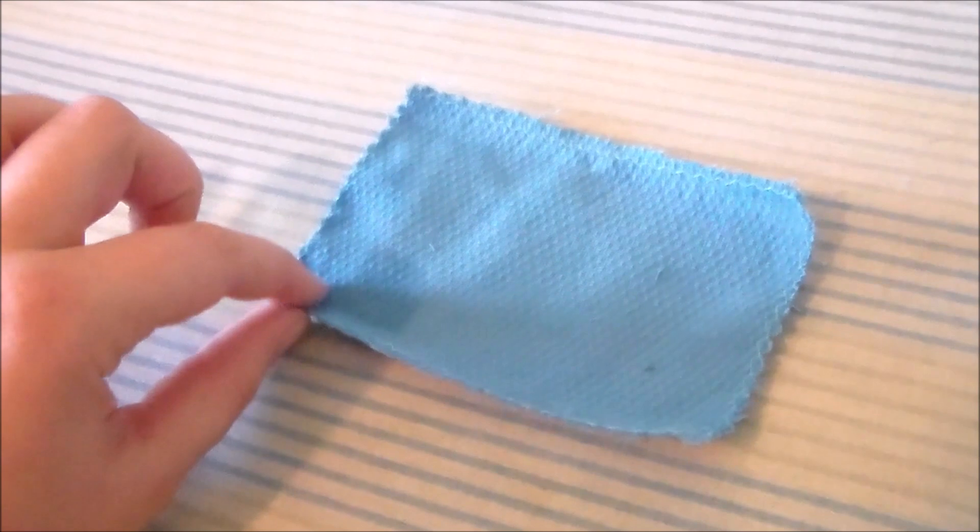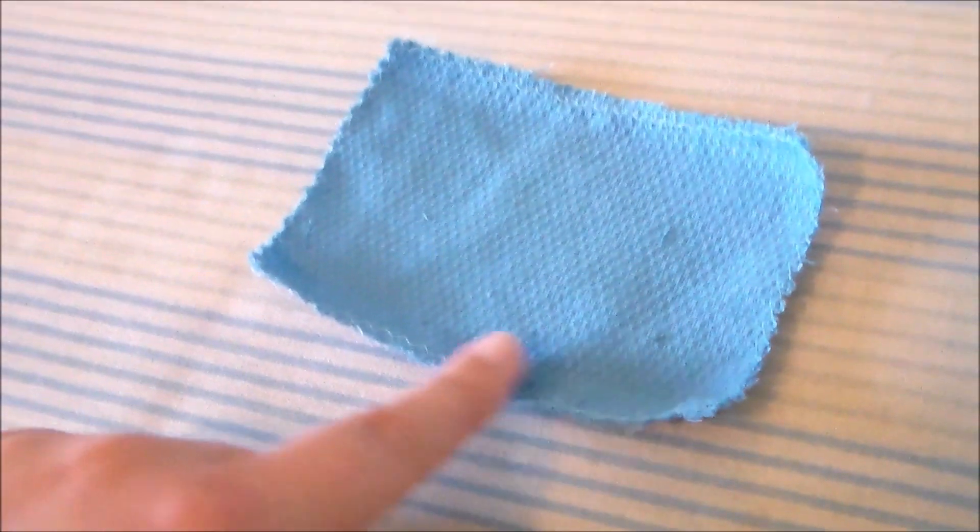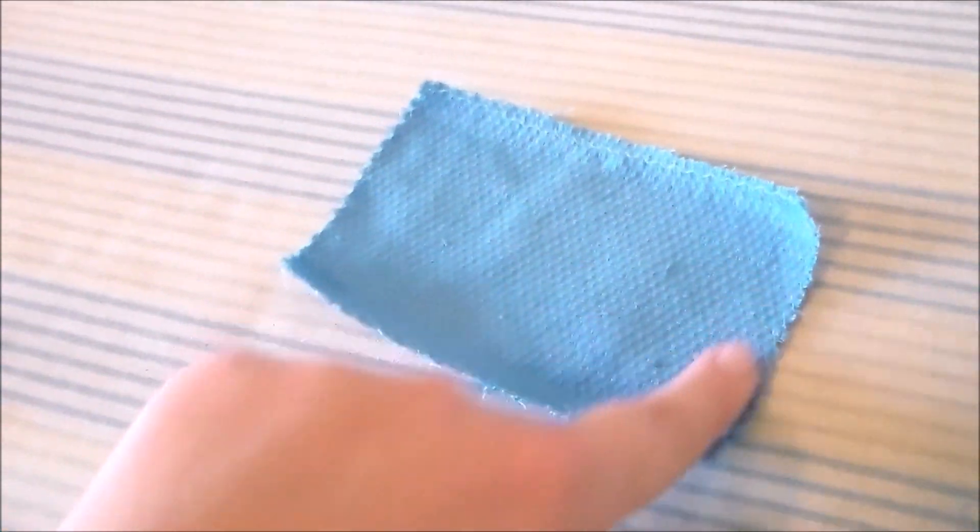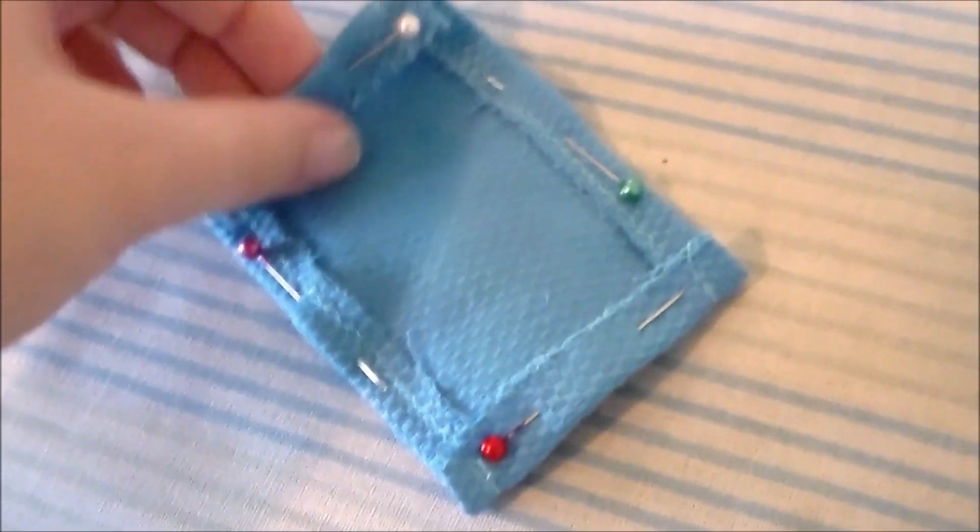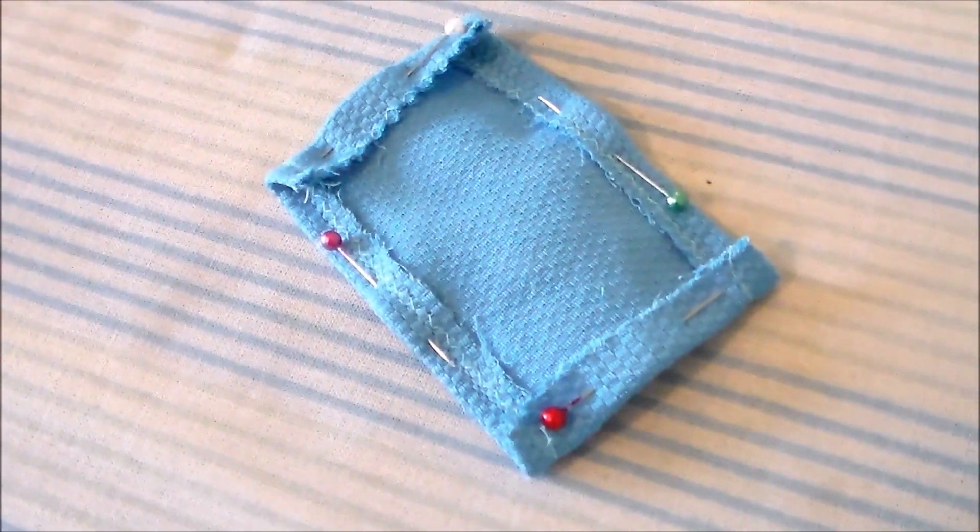To make the loop so that the pouch can be attached to the belt, we're going to cut another rectangle out of blue fabric and zigzag the edges to help keep them from fraying. Fold the edges inward and we're going to hem along all of the sides of the rectangle.